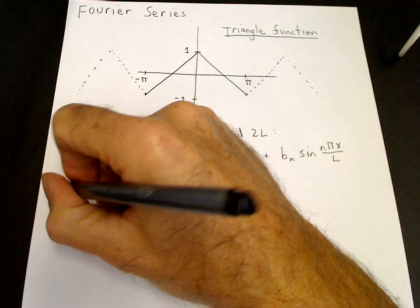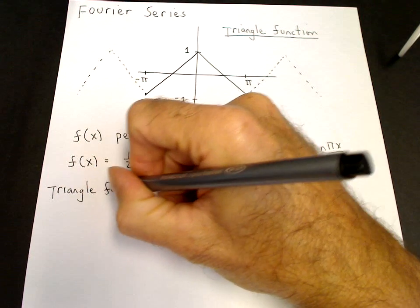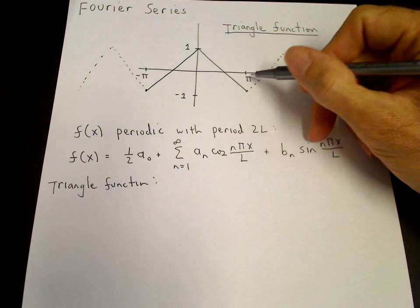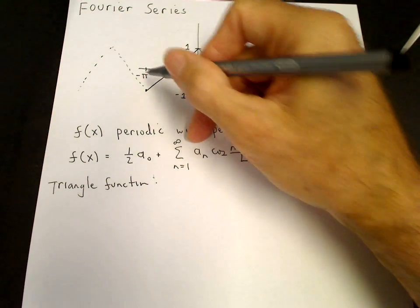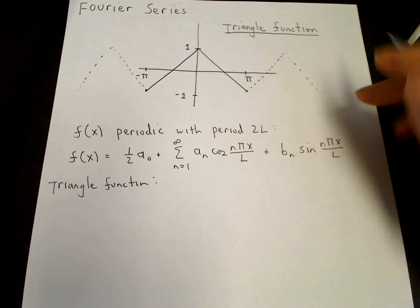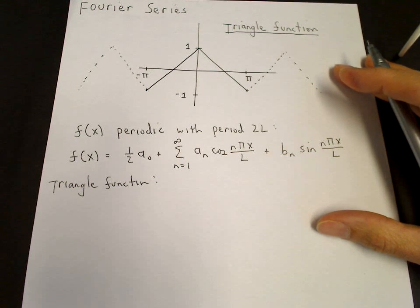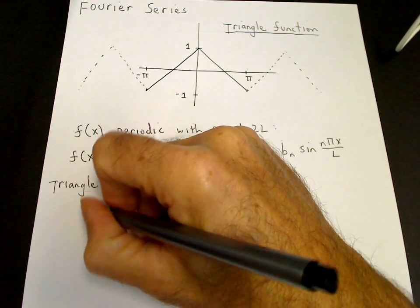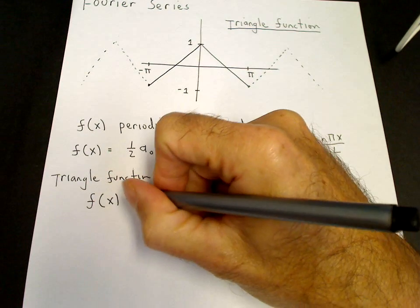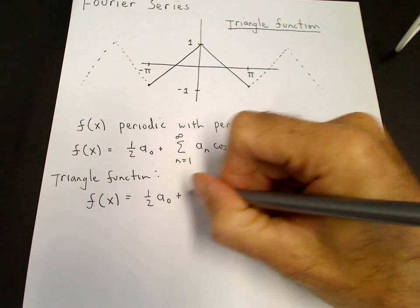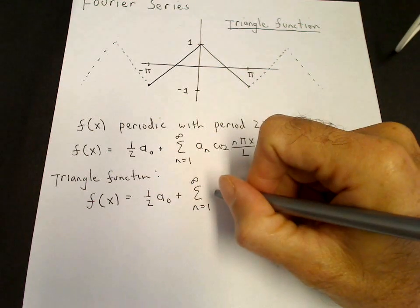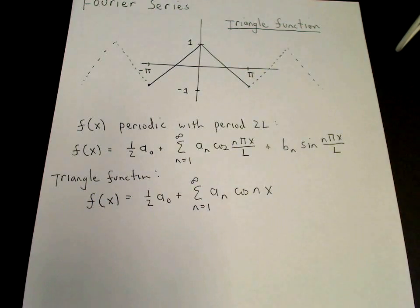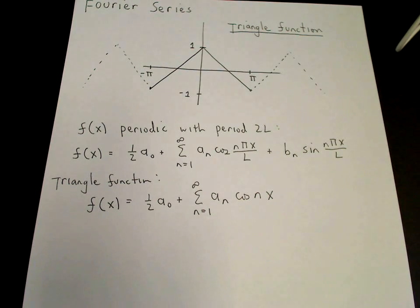For the triangle function represented above, we can just use a cosine series. Here l equals π because it's periodic between minus π and π. We only need the value of the function between 0 and π because of the symmetry. So the Fourier cosine series is f of x equals one half a0 plus the sum from n=1 to infinity of a_n cosine(nx).